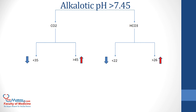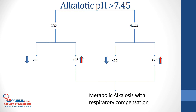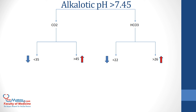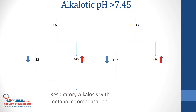Notice that when the arrows move together — that is when HCO3 is increased and CO2 is increased as well — then this is metabolic alkalosis with respiratory compensation. The same goes for respiratory alkalosis compensated metabolically: when CO2 is decreased together with the decrease of HCO3, this is respiratory alkalosis with metabolic compensation.